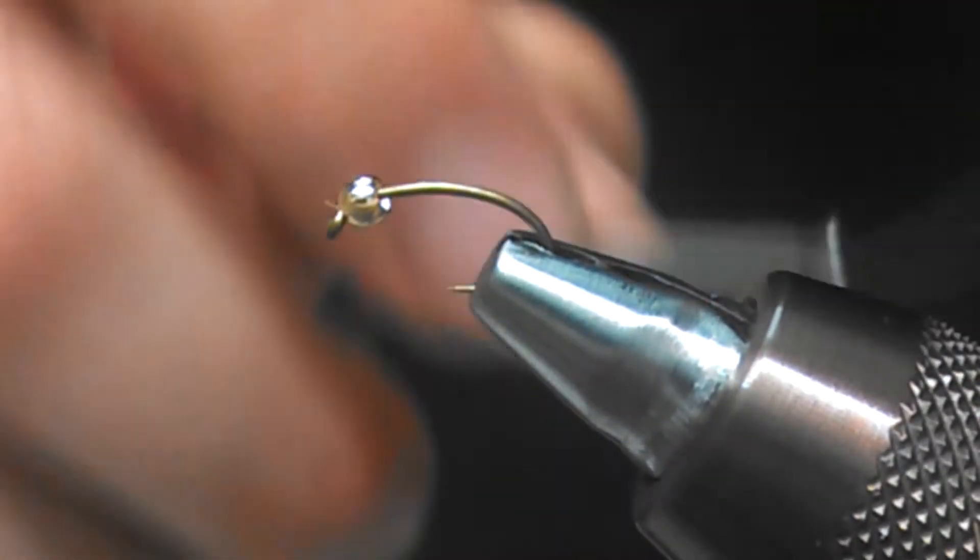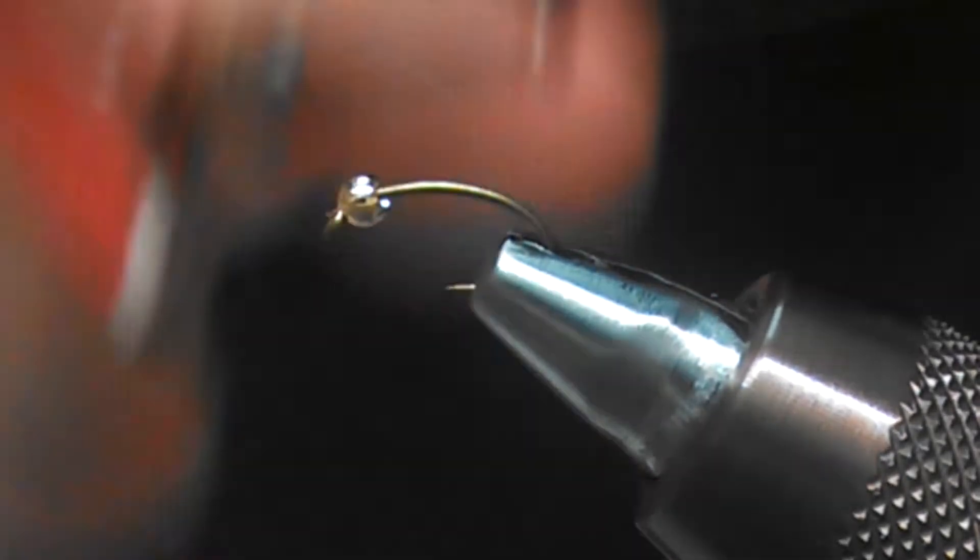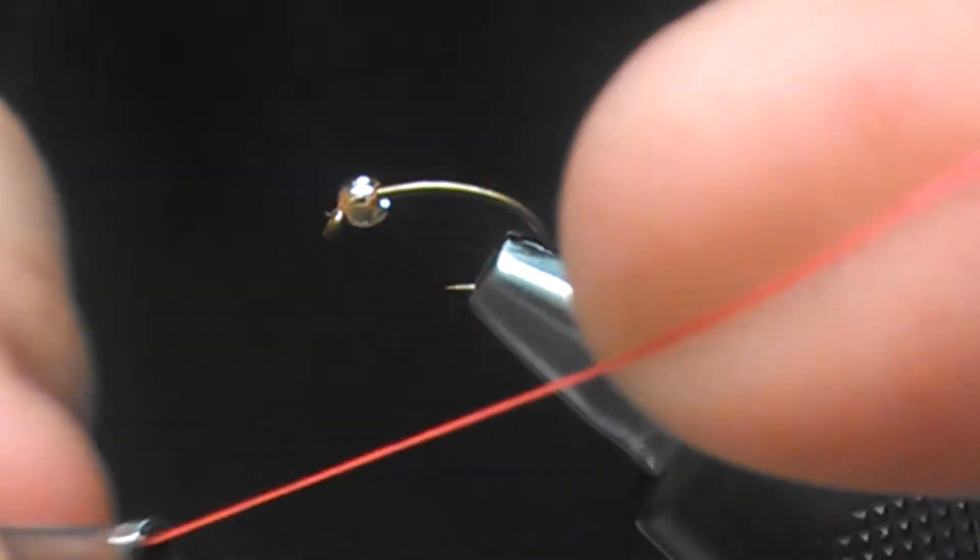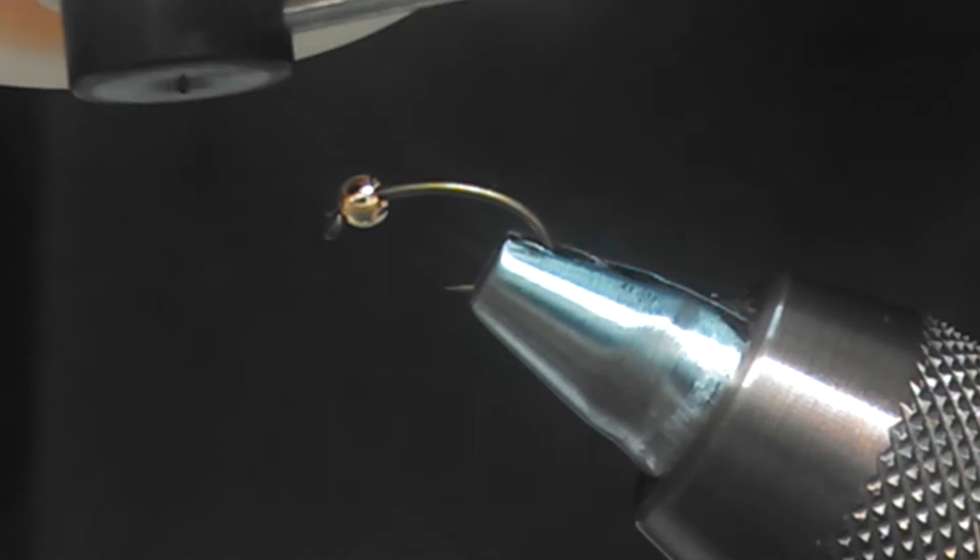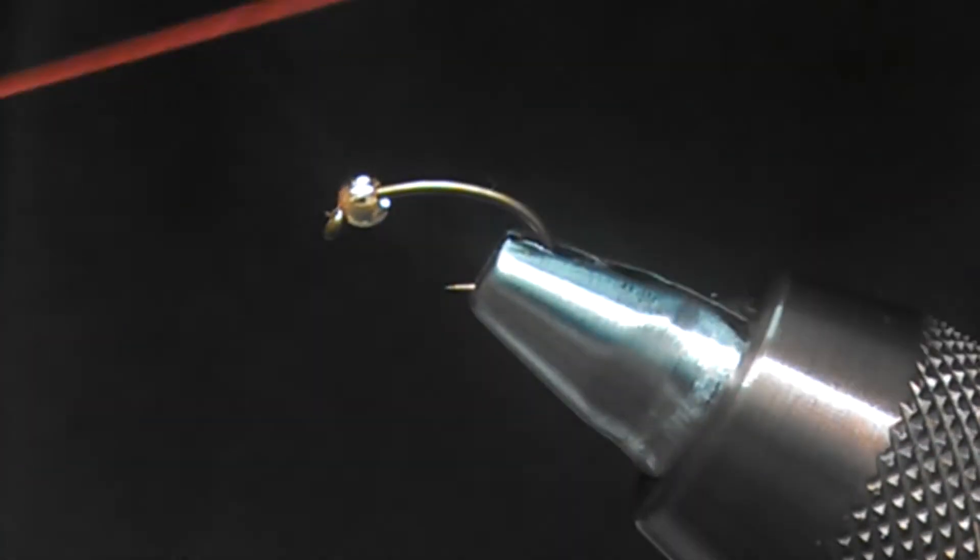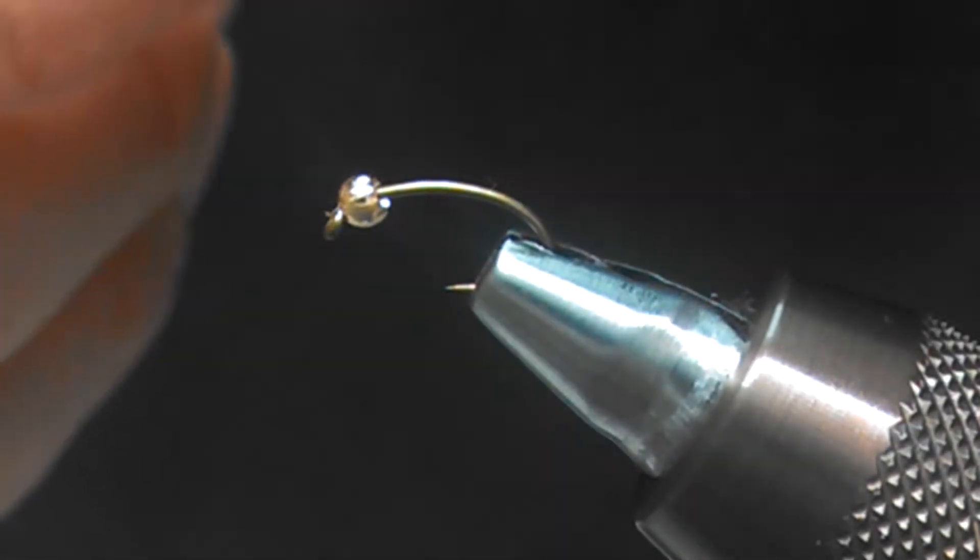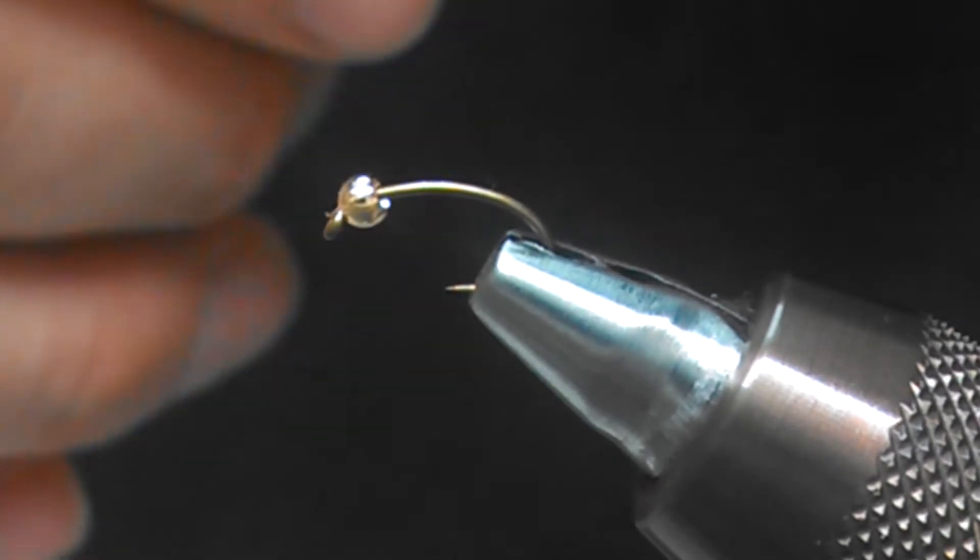We're starting off with a size 14 caddis type hook with a 5/32 gold bead on the head here. We're using Danville's flat wax hot pink thread. This is a good thread for these kinds of patterns. It doesn't detract too much from the egg style to it.